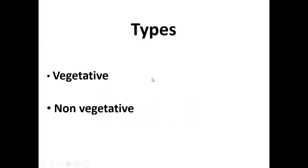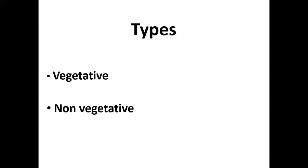The last topic from the larynx is the laryngo-tracheo-bronchial foreign body. There are two types: one is vegetative and the other is non-vegetative. Common vegetative foreign bodies are chhalia and peanuts. Non-vegetative foreign bodies include whistle, needle, metallic pieces, and glass pieces.